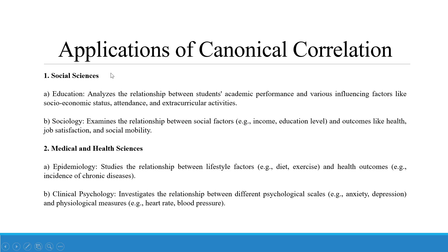The applications of canonical correlation are: in social science, it analyzes the relationship between students' academic performance and various influencing factors like socio-economic status, attendance, and extracurricular activities. In sociology, it examines the relationship between social factors — that is, income and education level — and outcomes like health, job satisfaction, and social mobility.